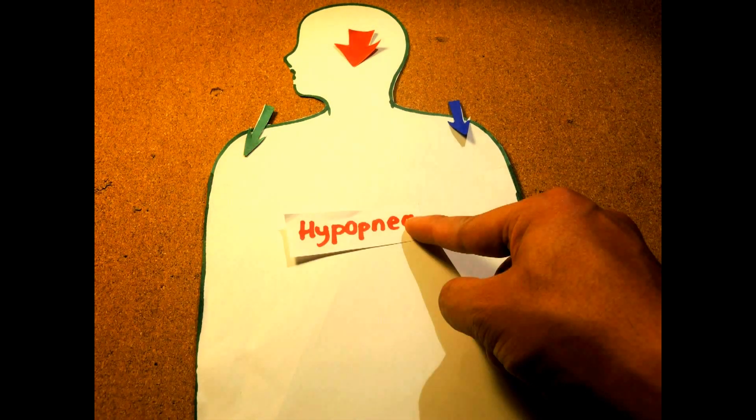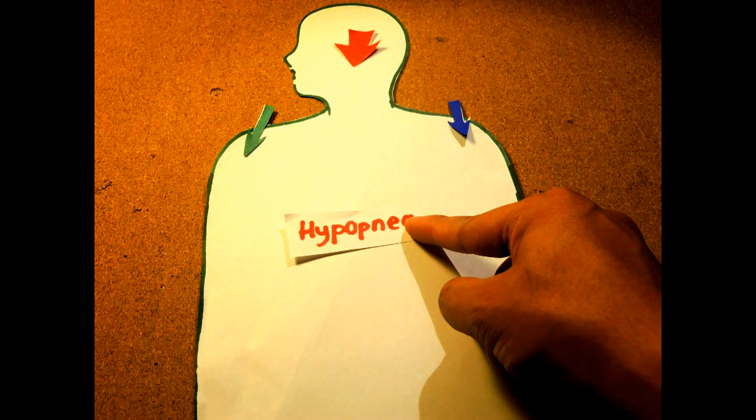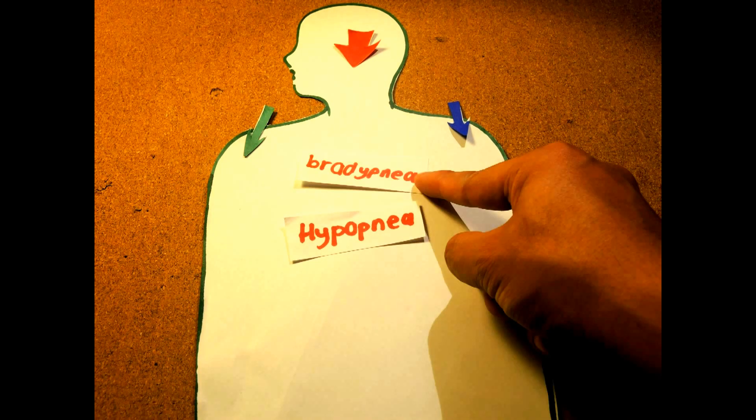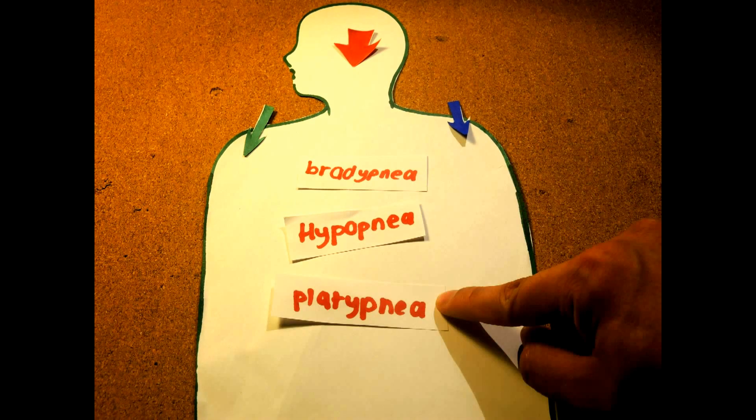For example, hypopnea, which is episodes of overly shallow breathing that decreases respiratory rate. We have bradypnea, which is a slow breathing rate that is usually affected by age. Platypnea, which is a type of shortness of breath that is relieved by lying down and worsens when standing up.